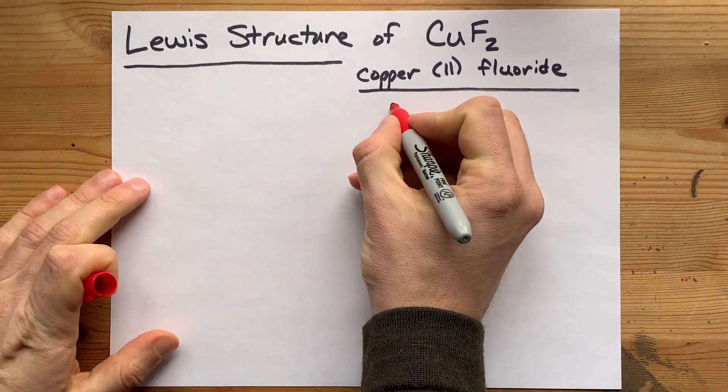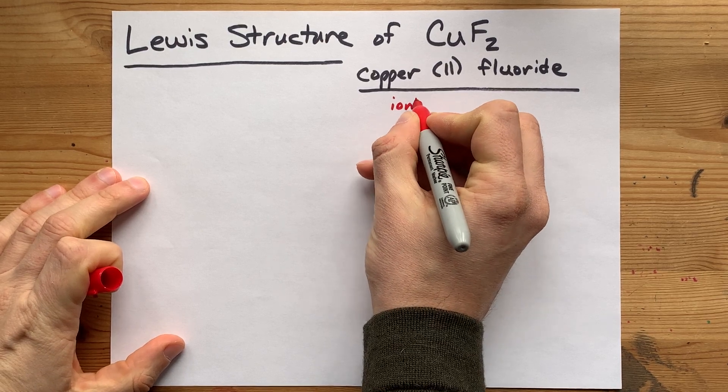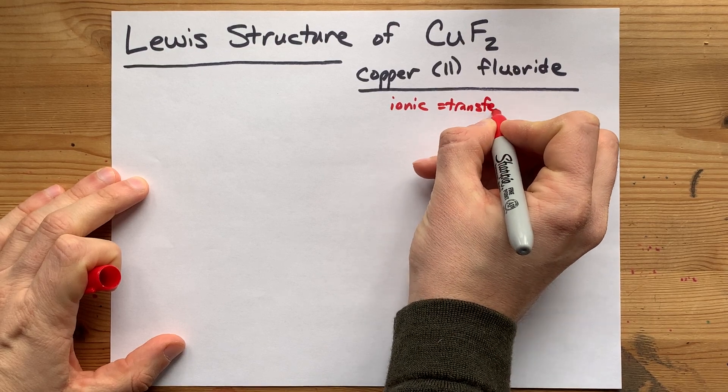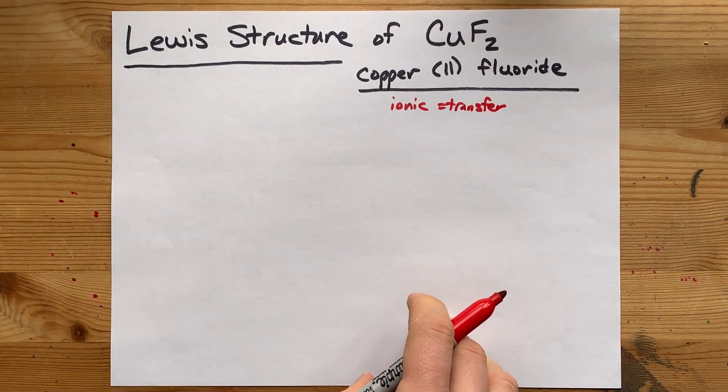That's significant because a metal and a non-metal will always bond together to make an ionic bond, and that happens via a transfer of electrons from one to the other.